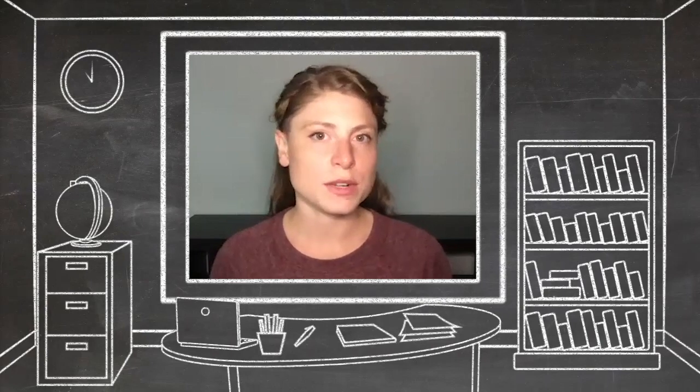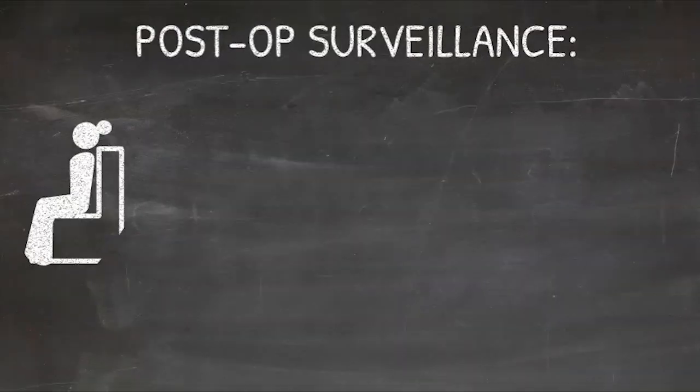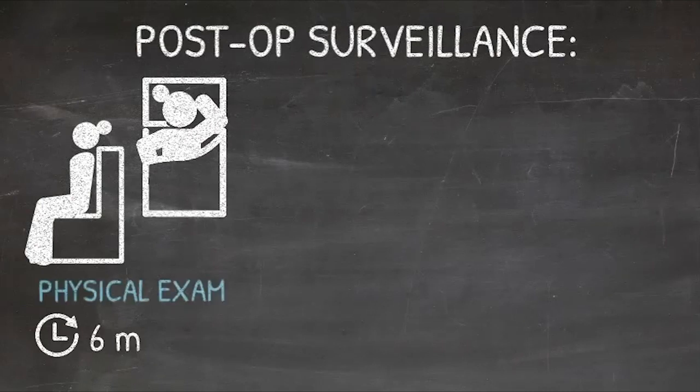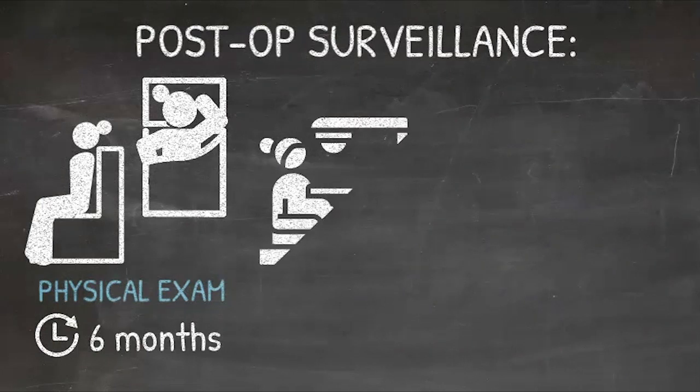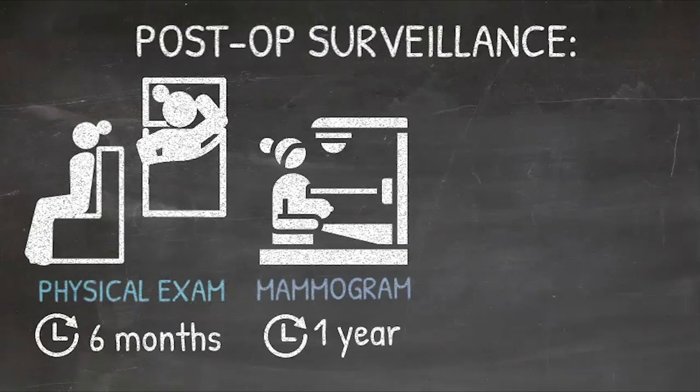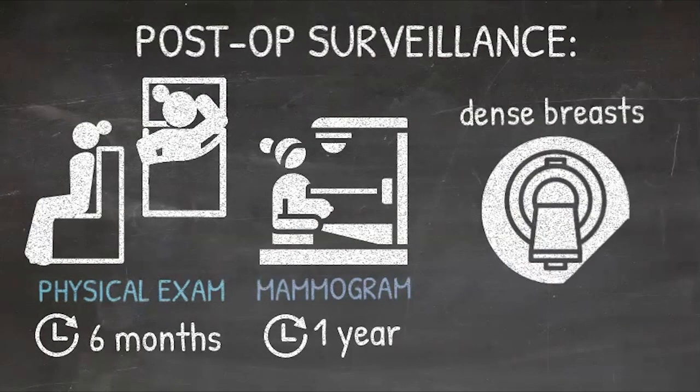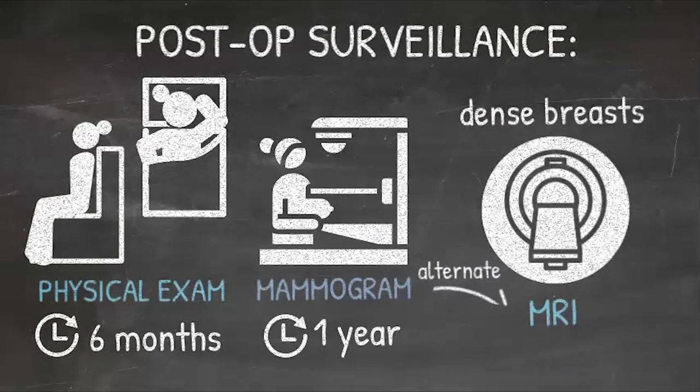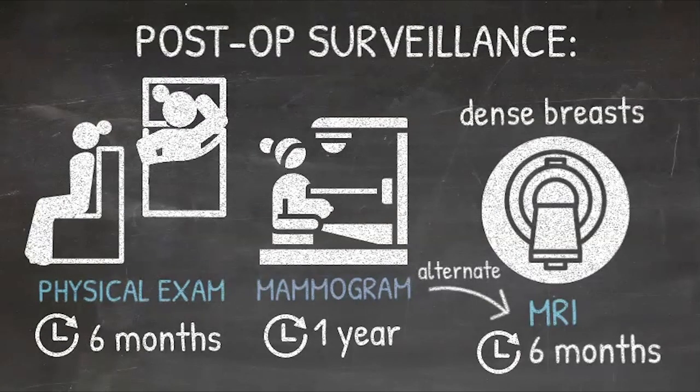What does the surveillance regimen look like for this patient? She's going to need to have a clinical examination by one of her physicians at least every six months. Generally, we rotate this among specialists. She's going to need mammography once a year, not more frequently, like every six months. That's been looked at carefully and there's no benefit to more frequent mammography. However, as she has heterogeneously dense breasts, we could add MRI, alternating six months to her regimen. So she'd be getting mammo and six months later, MRI.